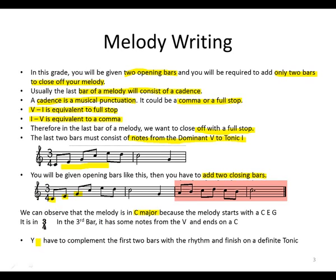We are also looking at the time signature, which is three-four. So whatever we're going to be adding to this melody must equal three beats. We notice that the highlighted part — the last two bars — is your third bar, which has some notes from the dominant and ends on a definite tonic.